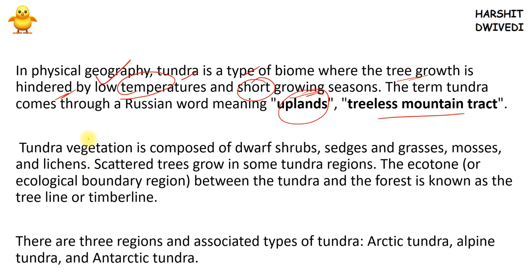If you talk about the vegetation which comprises the tundra biome, you are only going to find dwarf shrubs — not very tall — very short grasses, mosses, and lichens. Mosses and lichens are species available everywhere; they were the very first life forms to develop on Earth and are so productive that they can actually change the whole geology of a particular area. I have already discussed this role of mosses and lichens in my rocks video, so kindly go and watch it.